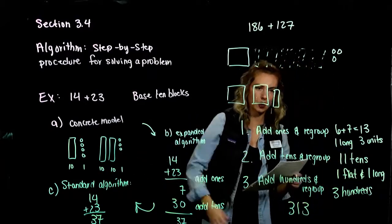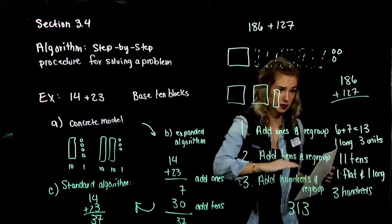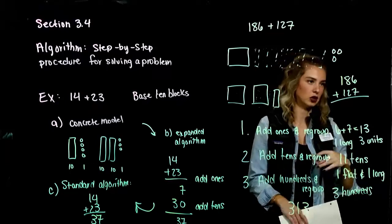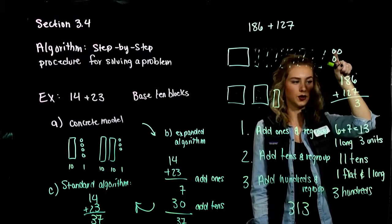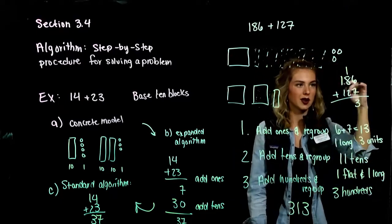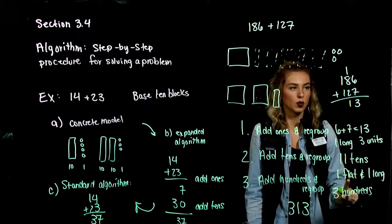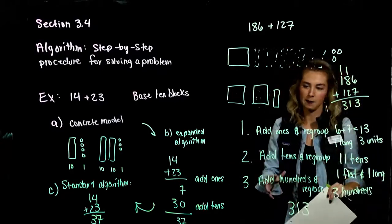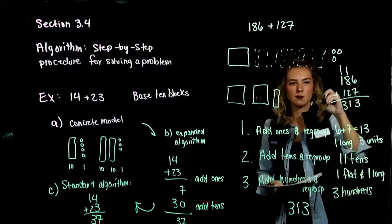When we move to the standard algorithm and compute 186 plus 127, we're doing this same process — the one we've been doing for years. We start from the right and combine all the way to the left. 6 and 7 gives us 13, so 3 units and 1 more long. Then 8, 9, 10, 11 tens — 1 long left over and 1 flat. That's 3 hundreds total. Same process every time, before we move to the standard algorithm.